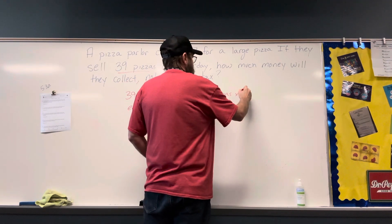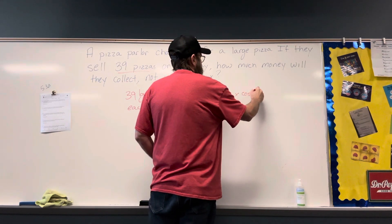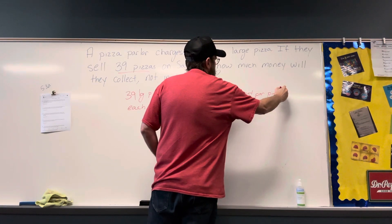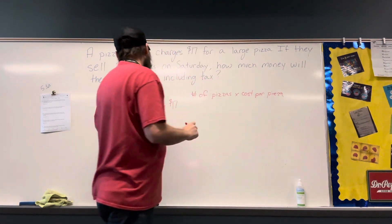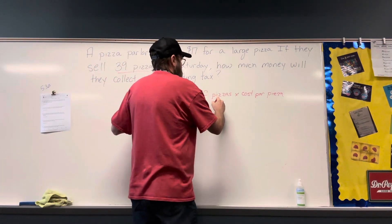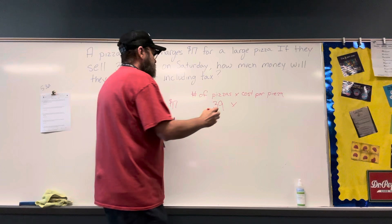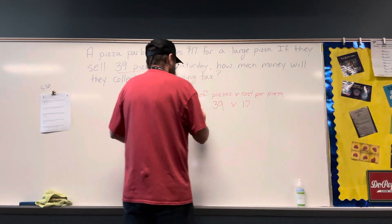So number of pizzas times cost per pizza. Number of pizzas is 39 times cost per pizza is $17.